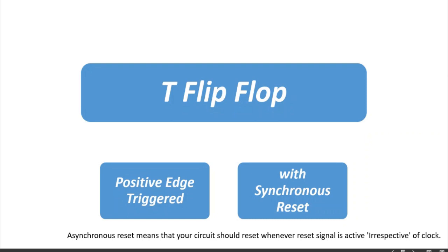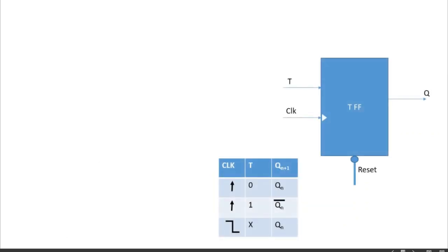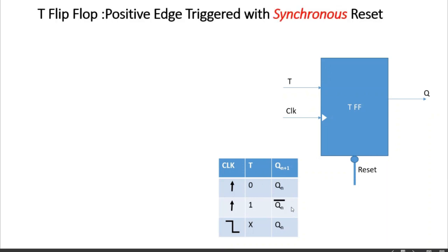Now we will learn how to write down the design module and test bench for the T flip-flop which is positive edge triggered and has synchronous reset. This is the block diagram of a T flip-flop, and this is the truth table: when T is 0 there is no change; when T is 1 the flip-flop toggles. This is what we have to realize using the design module.